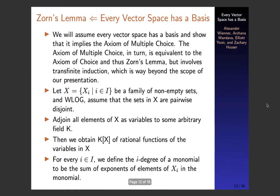Now we will discuss the other direction. We're going to assume that every vector space has a basis and show that this implies the Axiom of Multiple Choice. We will also assume the equivalence of the Axiom of Multiple Choice to the Axiom of Choice and thus Zorn's Lemma, because proving the Axiom of Multiple Choice implies the Axiom of Choice involves concepts like transfinite induction and ordinal numbers, which are beyond the scope of our presentation.